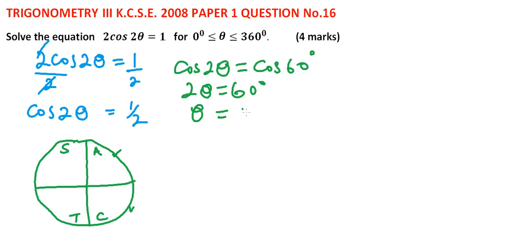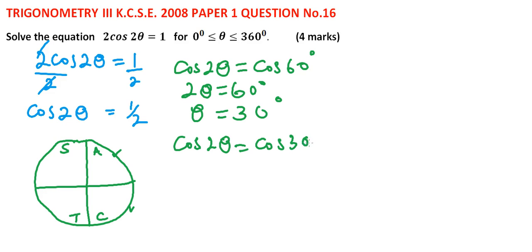From 2θ = 60°, we get θ = 30°. Since cosine is also positive in the fourth quadrant, the corresponding angle is 300°, so cos(2θ) = cos(300°), because cos(300°) = 1/2. Therefore 2θ = 300°, giving θ = 150°.